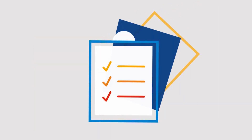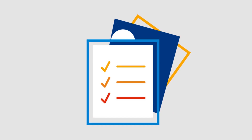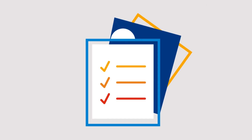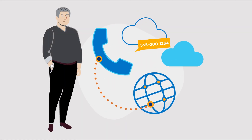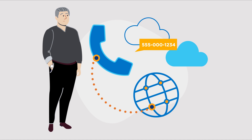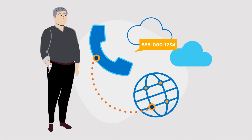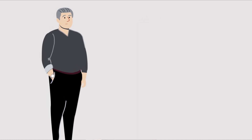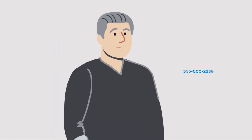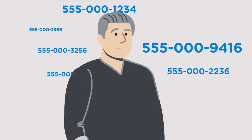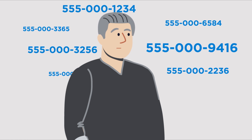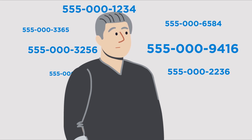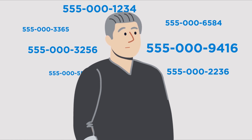To begin the process, there is some information you will need to have before initiating the order. Make sure you know all of the telephone numbers associated with the service. If there are multiple numbers, you can issue them on the same PON, or purchase order number, as long as they are all at the same address.